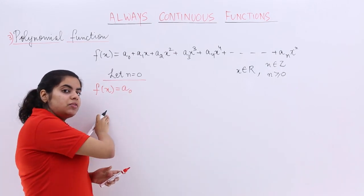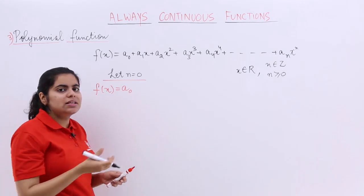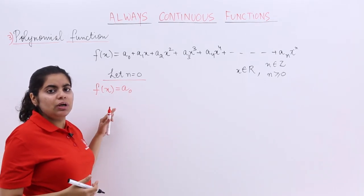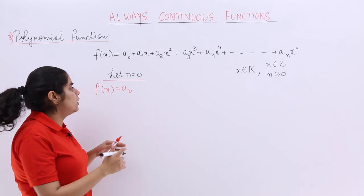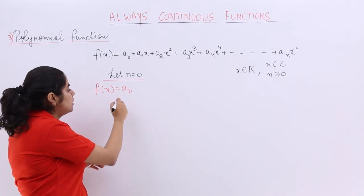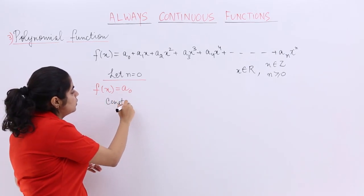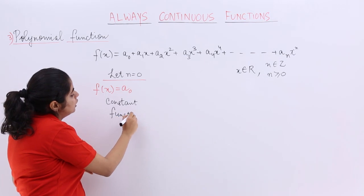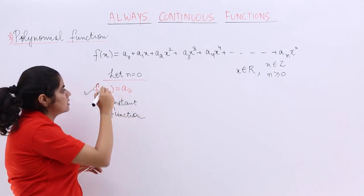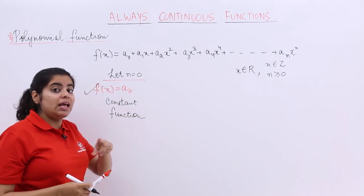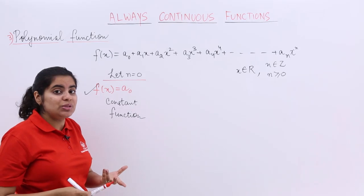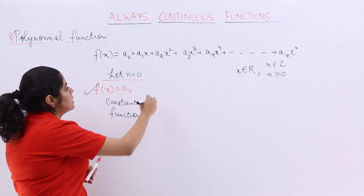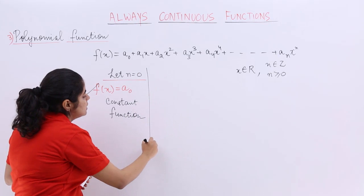Now, f(x) equal to a₀ — here a₀ is nothing but a constant. So this is similar to a constant function, and I know that a constant function is continuous everywhere. So even this polynomial function when n is equal to 0 will also be continuous everywhere. This is done for n equal to 0.